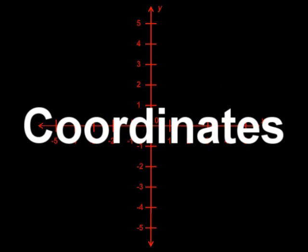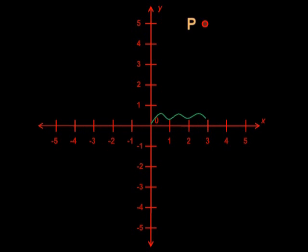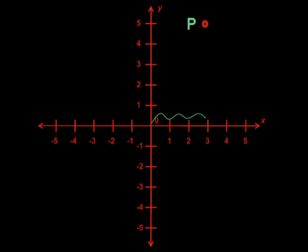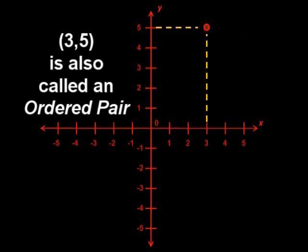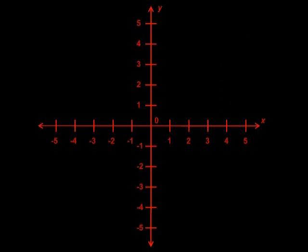We mark points using coordinates. If we wanted to show where point P is on the coordinate system, we would say it is at 3 comma 5, because it is 3 across and 5 up. I hope that helps, but let's take a better look. Follow me.